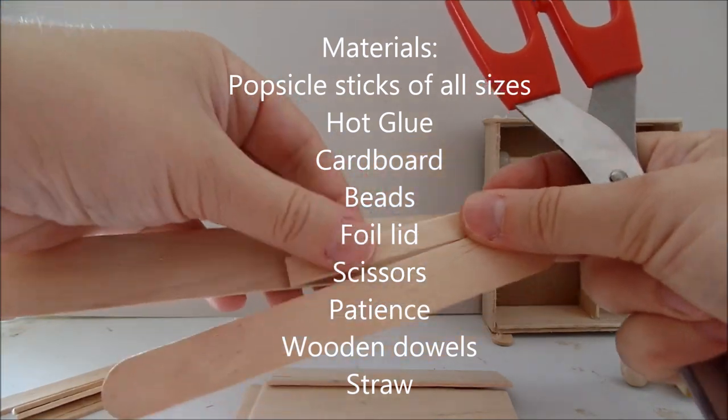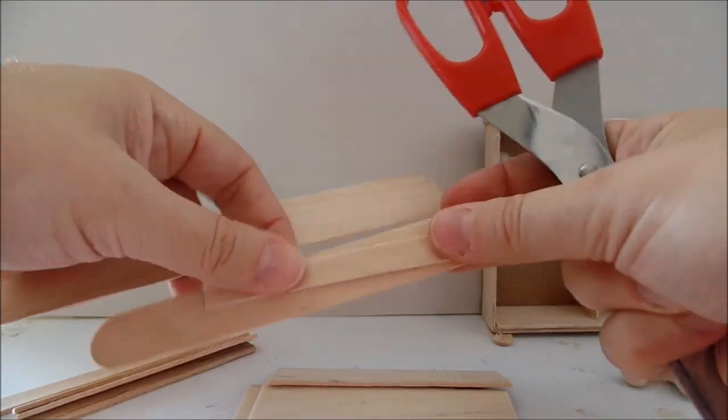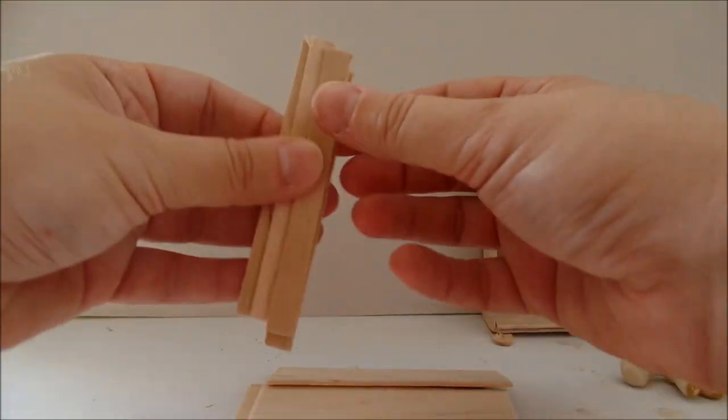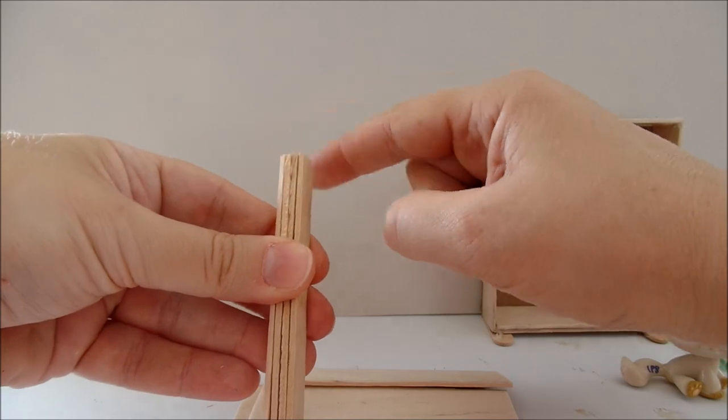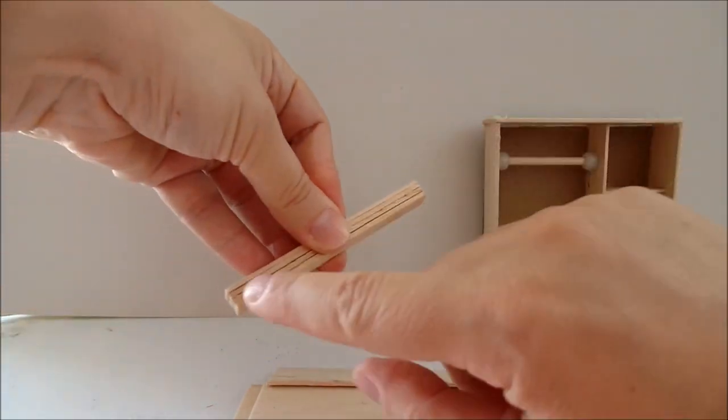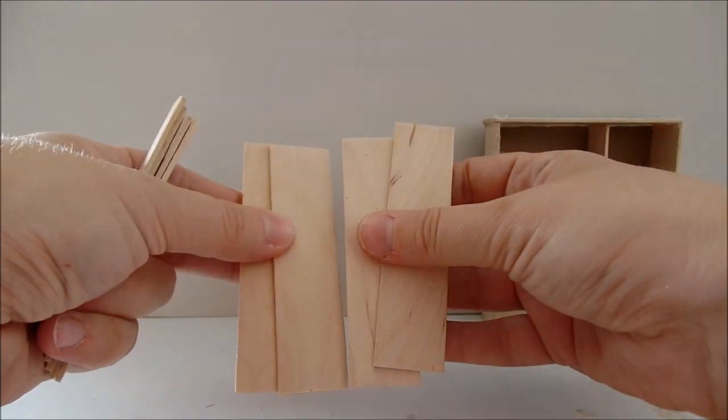You will need scissors and popsicle sticks of all sizes, including jumbo and the smallest size. Start by taking four small-size popsicles, cut off the tops - that's more or less the length you're left with - and cut four jumbo popsicles of the same height.